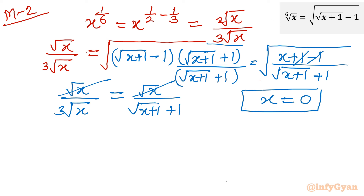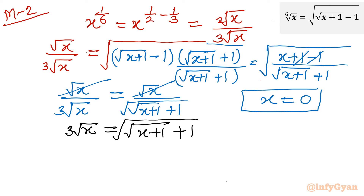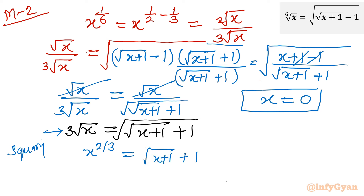After cancelling, we equate the denominators: cube root of x equals square root of (x plus 1) plus 1. Now squaring both sides: left hand side is x to the power 2 by 3, and right hand side is (square root of (x plus 1) plus 1) squared, so the square root cancels leaving x plus 1. Moving 1 to the left: x to the power 2 by 3 minus 1 equals square root of (x plus 1). Squaring both sides again to remove the square root.